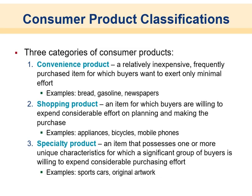Shopping products are items for which buyers are willing to expend considerable effort planning the purchase — like going to Lowe's or Home Depot to buy a new fridge, or shopping around for mobile phones. Specialty products possess one or more unique characteristics with a significant group of buyers willing to expend considerable purchasing effort — like artwork or buying a fancy car. Most of us dwell heavily in convenience and shopping products, and every now and then dabble in specialty products.